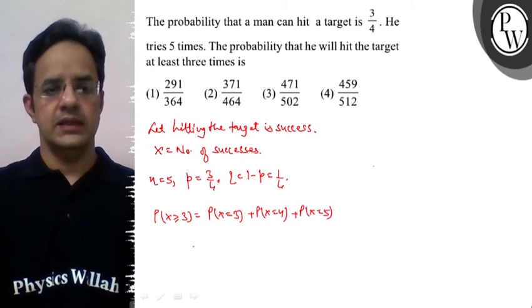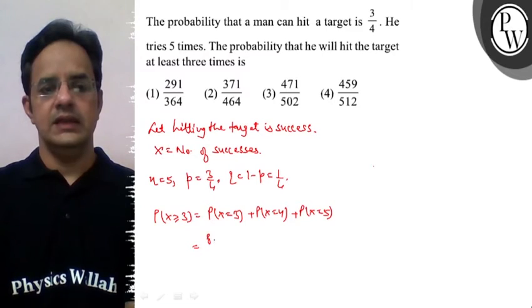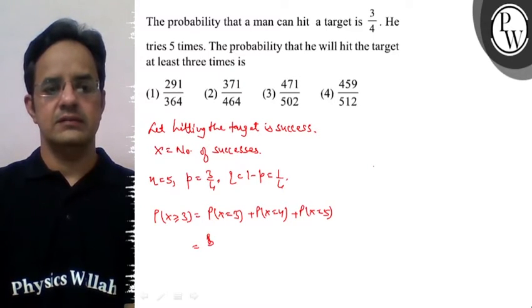For X=3, we have 5C3. The probability of success is 3/4, that is (3/4)³ and (1/4)².